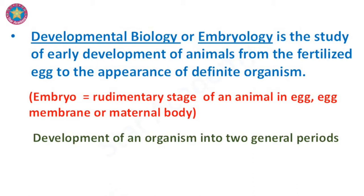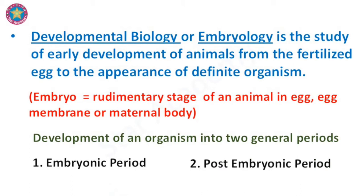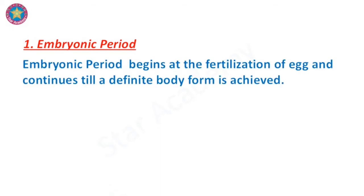Development of an organism as a whole may be divided into two general periods: embryonic period and post-embryonic period. The embryonic period begins at fertilization of an egg and continues until a definite body form is achieved — at birth in viviparous forms, hatching in oviparous forms, and end of metamorphosis in free-living forms.